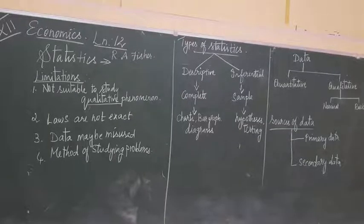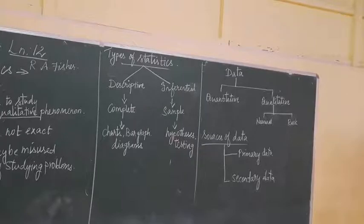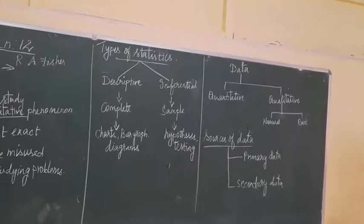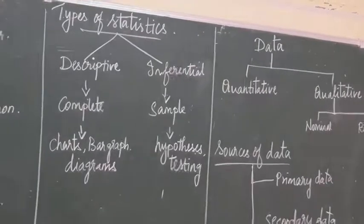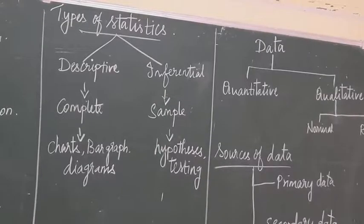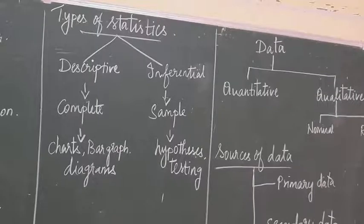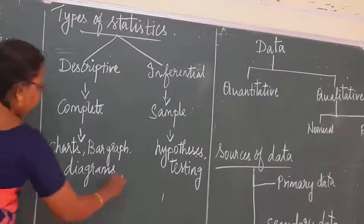Now we are going to study the types of statistics. There are two types: one is descriptive, and the other is inferential. Descriptive statistics is a summary of complete data. By the descriptive method, we can present the data through charts, bar graphs, diagrams, graphs, and other visual tools — through these things we can describe the data.